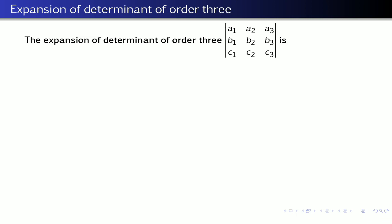Now we consider the expansion of a determinant of order 3. For the determinant of order 3, let us consider it as elements a1, a2, a3 in the first row; b1, b2, b3 in the second row; and c1, c2, c3 in the third row.